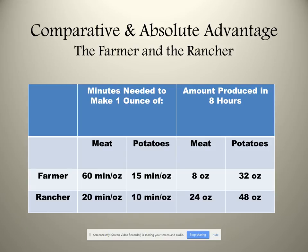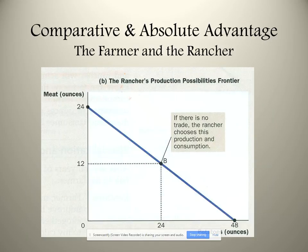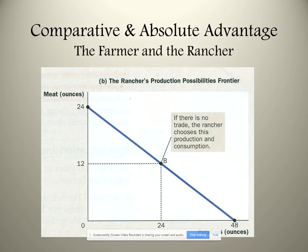What about comparative advantage? That depends on opportunity cost. As it stands, the rancher makes a deal with the farmer and says: 'Farmer, you need to stop making meat — you're not good at that. Stop making meat and make all potatoes. I'll make fewer potatoes and more meat, and then we'll trade some meat and potatoes, and we'll both have more.'